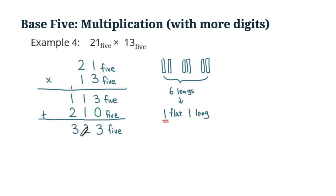So the answer for 21 base 5 times 13 base 5 is 323 base 5. And we are going to do a more difficult example next time. Thank you for watching.